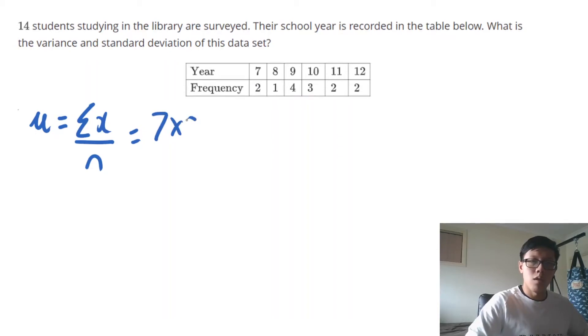So there are two year seven students, there's one year eight student, there's four year nine students, there's three year ten students, two year eleven students, and two year twelve students.